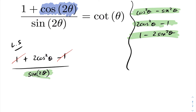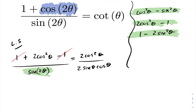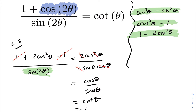I'll also rewrite sine 2theta as 2 sine theta cos theta. Doing so, the twos cancel, one of the cosines cancels, and I'm left with cos theta over sine theta, which equals cotangent theta — our right hand side.